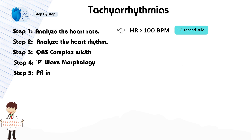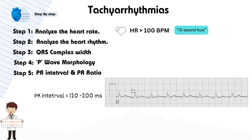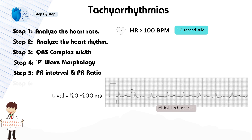Step 5: Determine the PR interval and PR ratio. A normal PR interval is 120 to 200 milliseconds, and the ratio can reveal important information. For example, a measured PR interval of 260 milliseconds — a prolonged PR interval — may indicate atrial tachycardia or atypical AV nodal re-entry tachycardia.